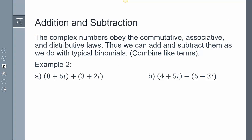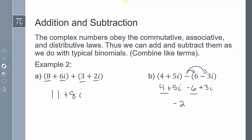Complex numbers still have all the properties of other numbers — commutative, associative, and distributive. So we can combine things like normal: 8 plus 3 is 11, and 6i plus 2i gives 8i. If we have a negative, we distribute it to get 4 plus 5i minus 6 plus 3i. Then 4 and negative 6 gives negative 2, and 5i and 3i gives plus 8i.